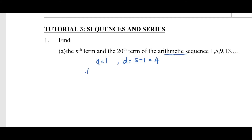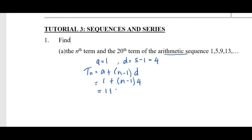Since this is an arithmetic sequence, the formula for the nth term is tn = a + (n−1)d. Substituting a = 1 and d = 4, we get tn = 1 + (n−1) × 4. Expanding gives 1 + 4n − 4, which simplifies to tn = 4n − 3.